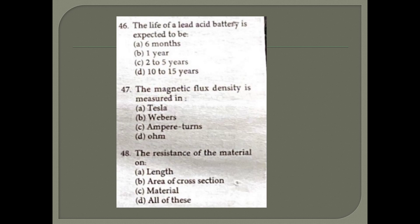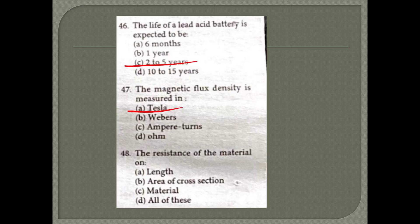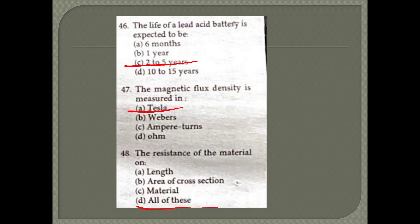Electroplating takes place on cathode. The storage battery generally used in electric power stations is lead acid battery. The life of lead acid battery is expected to be 2 to 5 years. Magnetic flux density is measured in Tesla. The resistance of material depends on length, area of cross-section, and material - all of the above. Option D.